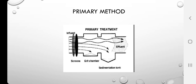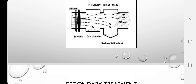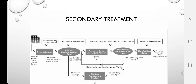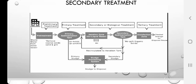The settling in the sedimentation tank takes a bit longer compared to the grit chamber. The concentrated solid material that settles down forms the primary sludge. The effluent is then taken for secondary treatment. It is important to note the basic difference between primary sludge and secondary sludge.